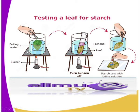The first procedure: you obtain a leaf that has been exposed to light for at least five hours. You boil water in a beaker. You dip the leaf in the boiling water for three to four minutes. You then put the leaf in a boiling tube containing methylated spirit.